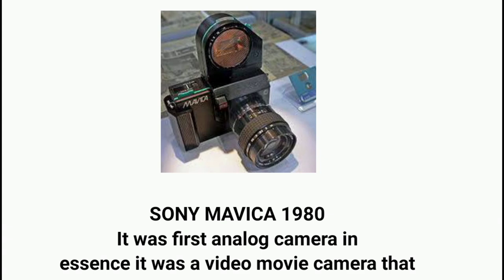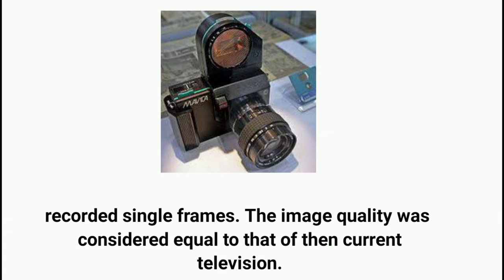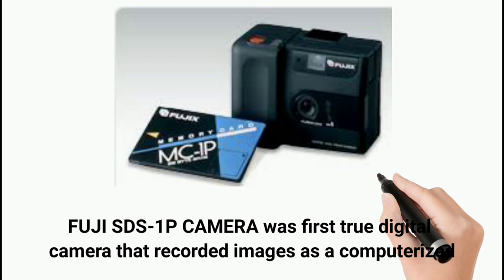The Fuji DS-1P camera was the first true digital camera that recorded images as a computerized file, recorded to a 16MB internal memory card powered by a battery to retain data.